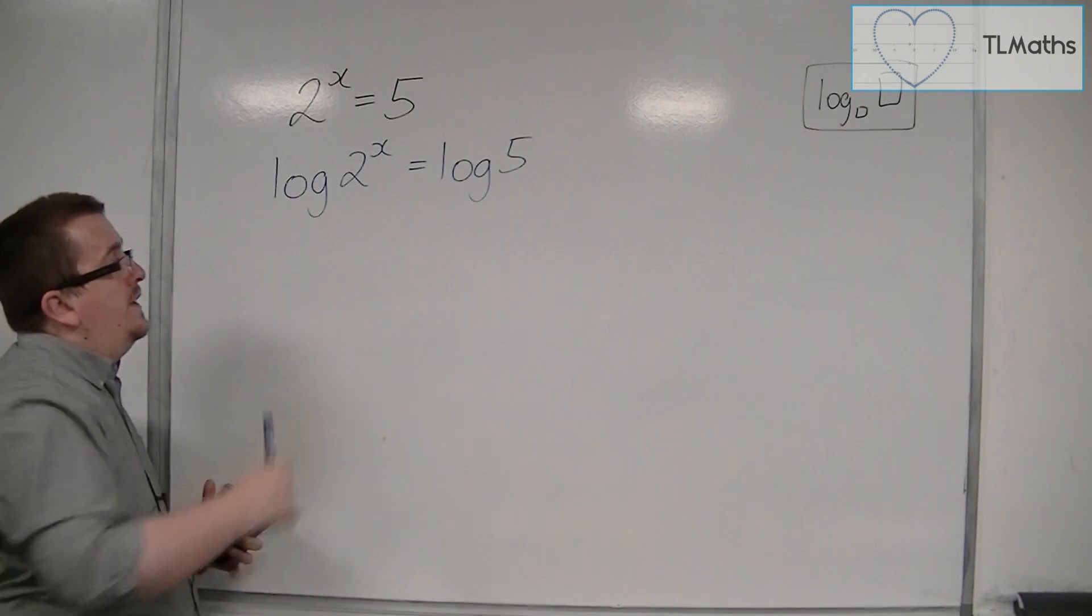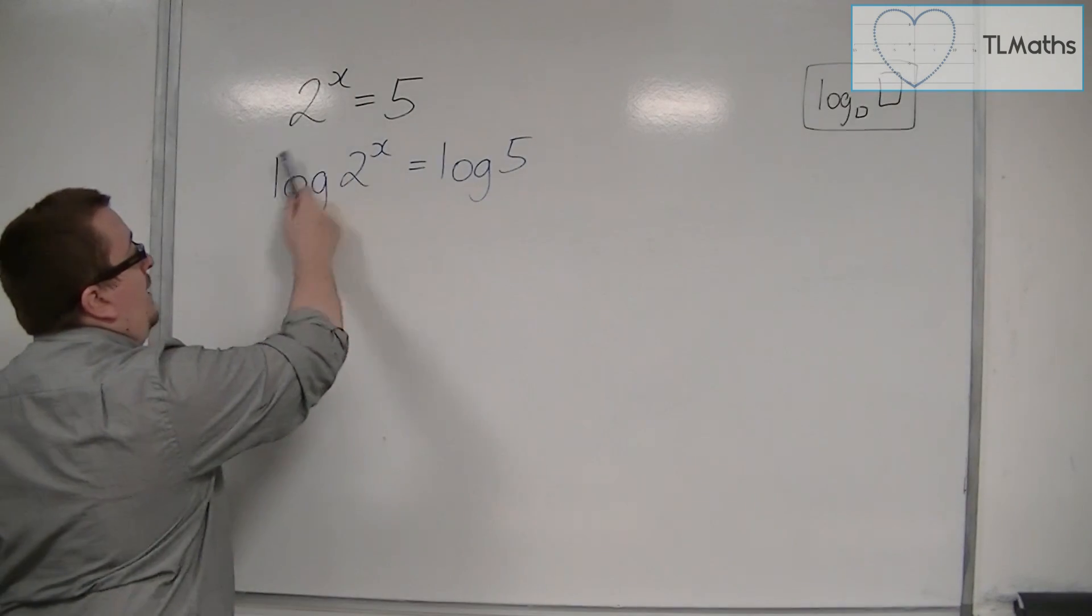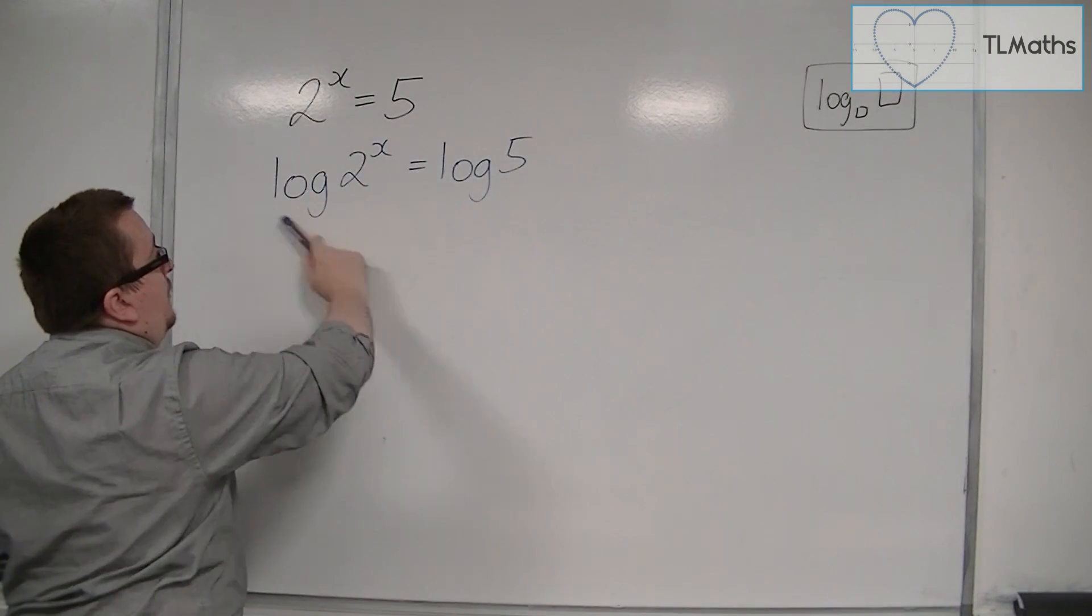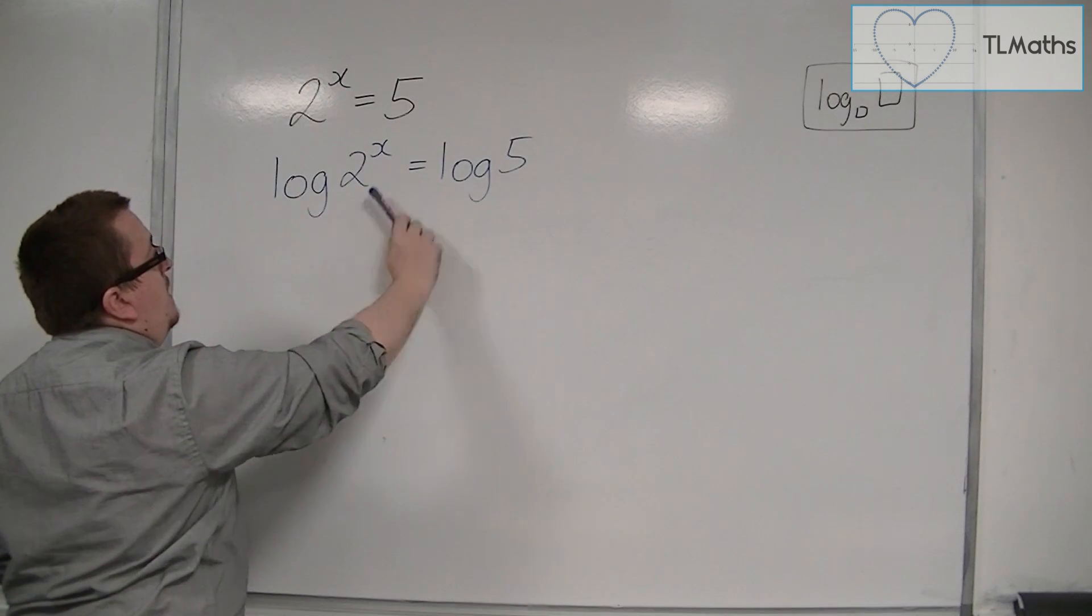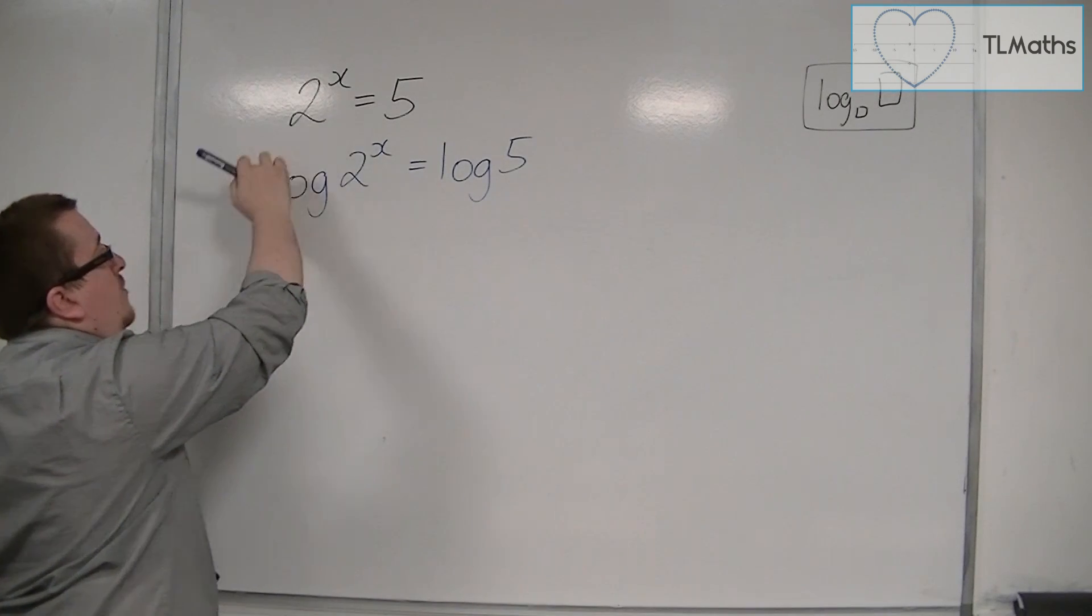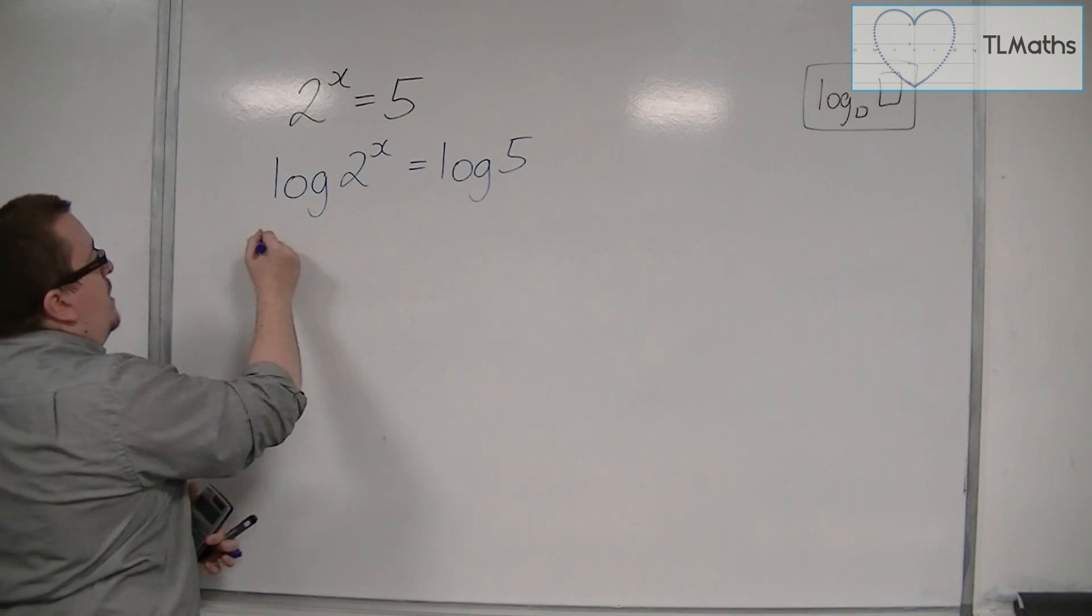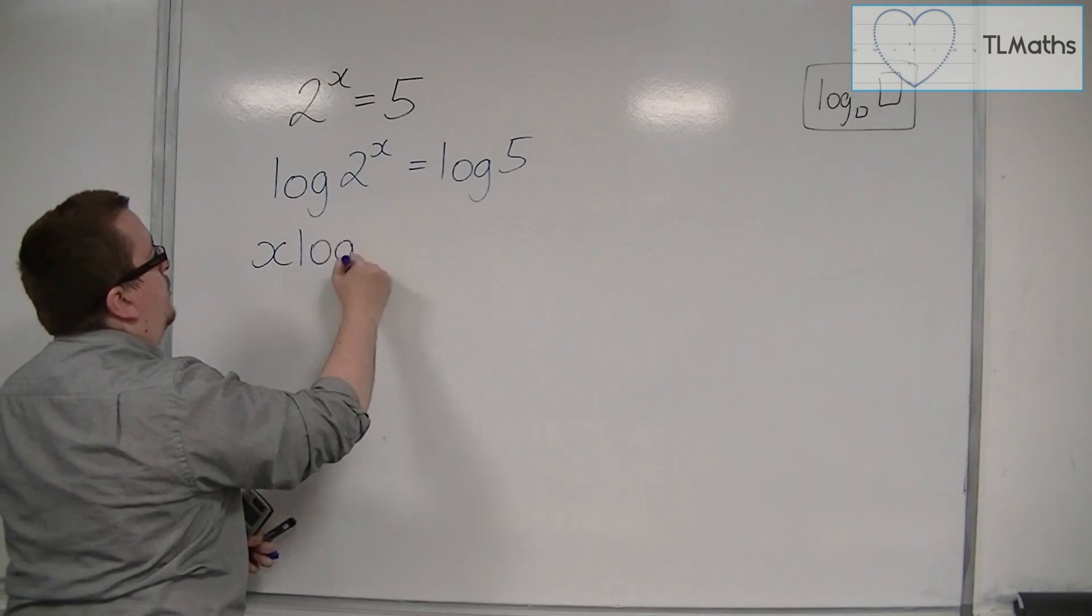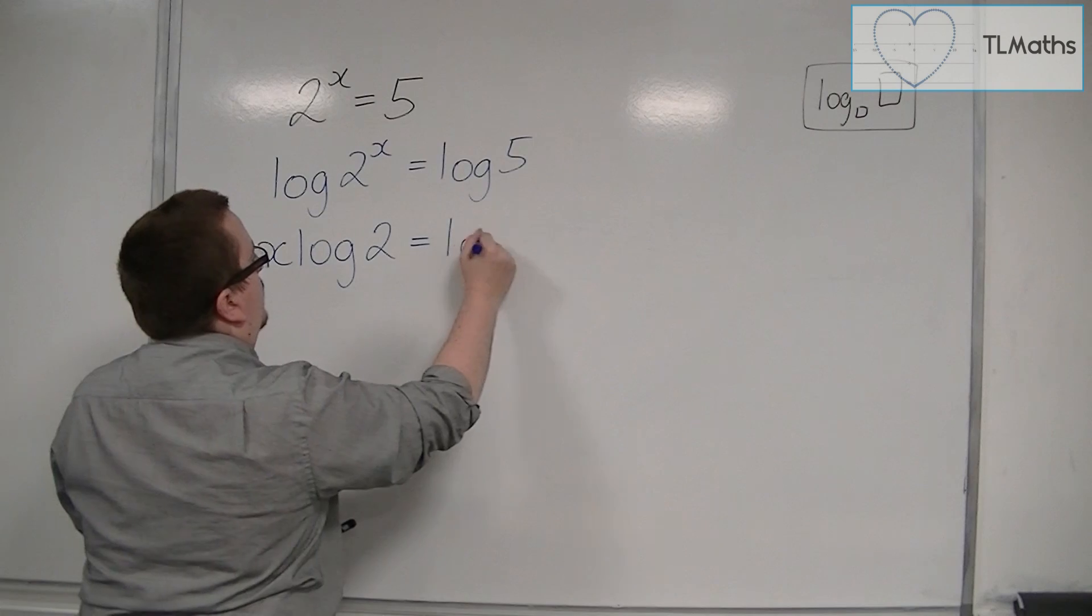Once we're at this stage, we can use one of the laws of logarithms to simplify the left-hand side. The x can be brought down to the front of the logarithm, so we can write it as x log 2 is equal to log 5.